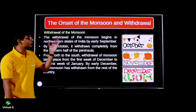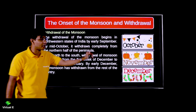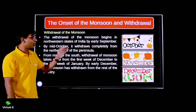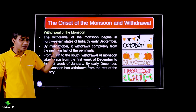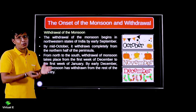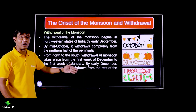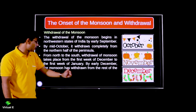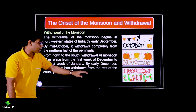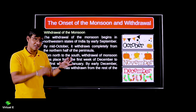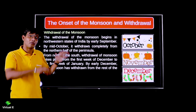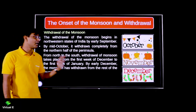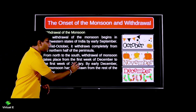Withdrawal of the monsoon begins from the northwestern states in early September. By mid-September, monsoon withdraws from most of the country. By mid-October, it exits the whole country. The last withdrawal happens from the Andaman and Nicobar Islands - logically, monsoon arrives there first and withdraws last. From north to south, withdrawal takes from the first week of December to the first week of January for the southern part, because Tamil Nadu receives rainfall from the retreating monsoon in December-January. Final complete withdrawal is by end of December or first week of January.